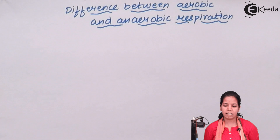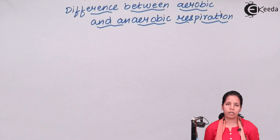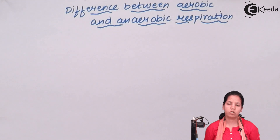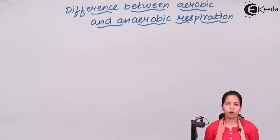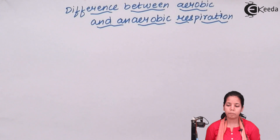Aerobic respiration basically takes place in eukaryotic cells, whereas anaerobic respiration takes place in prokaryotic cells — bacterial cells, single-cellular organisms, or unicellular organisms.